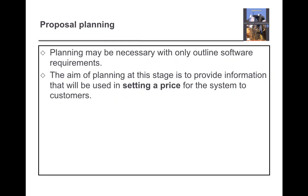Taking planning stages and project planning together, let's see what proposal planning is. Proposal planning may be necessary with only outline software requirements — that is a very important term. The aim of planning at this stage is to provide information that will be used in setting a price. The main agenda of proposal planning is to give a cost estimate to the customer for a particular software development.